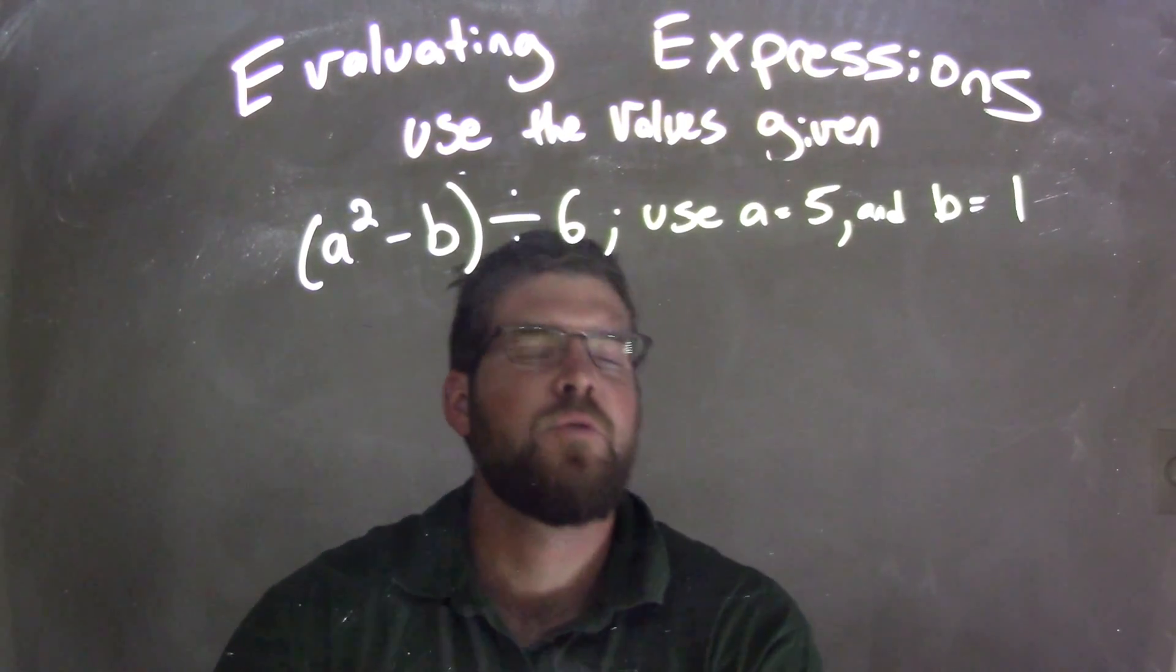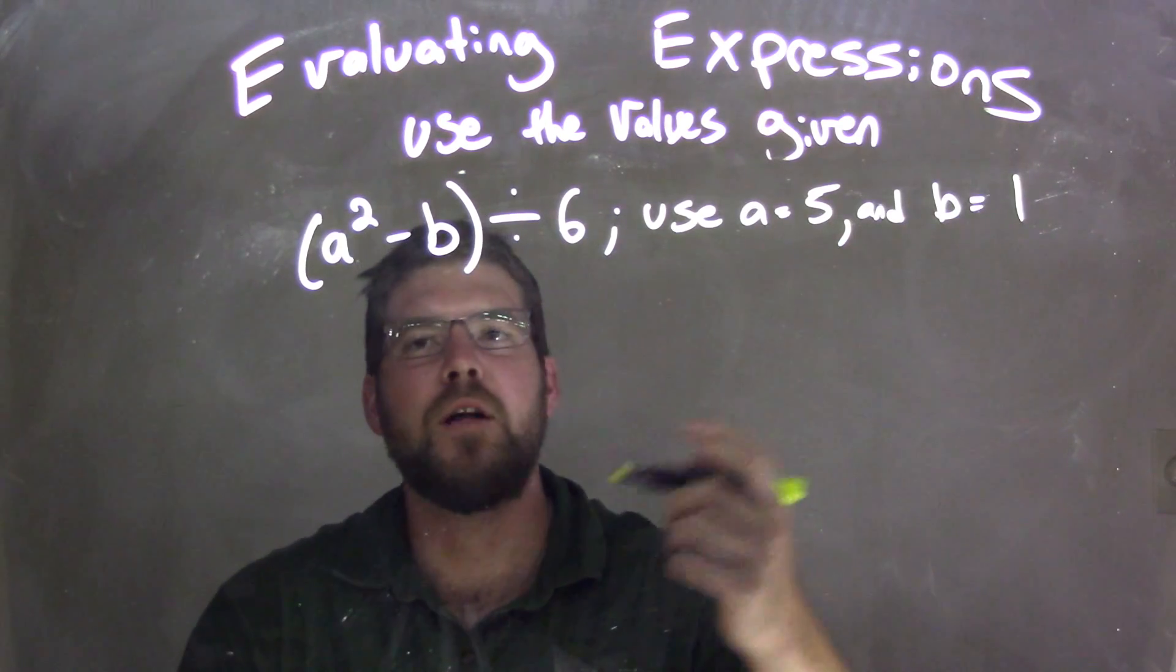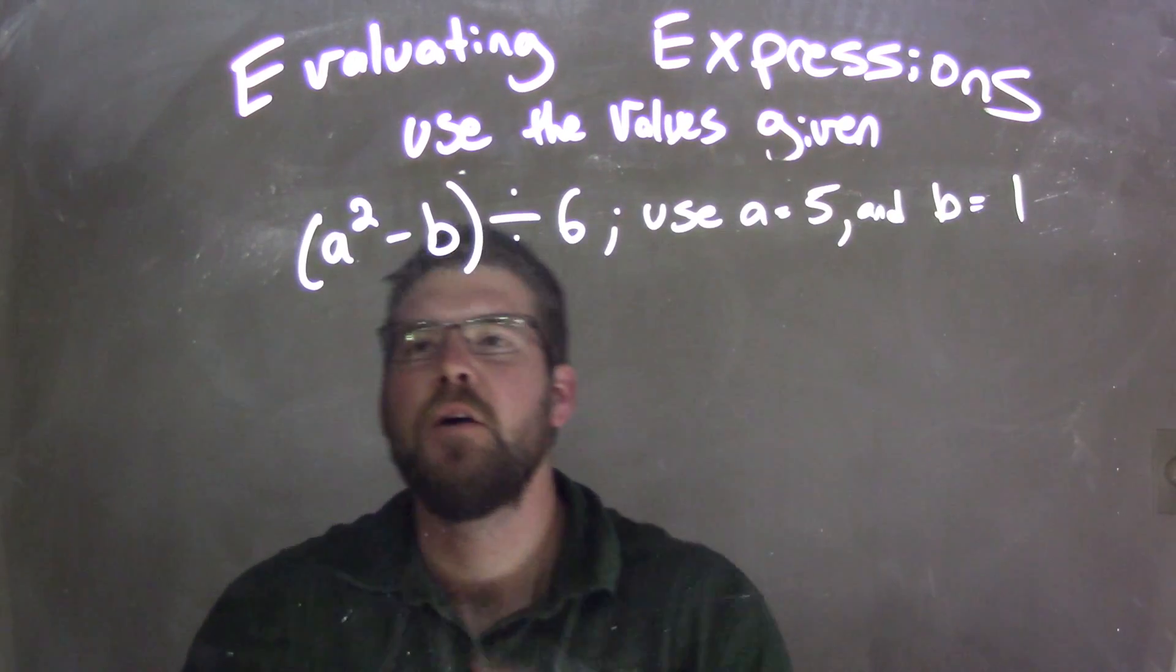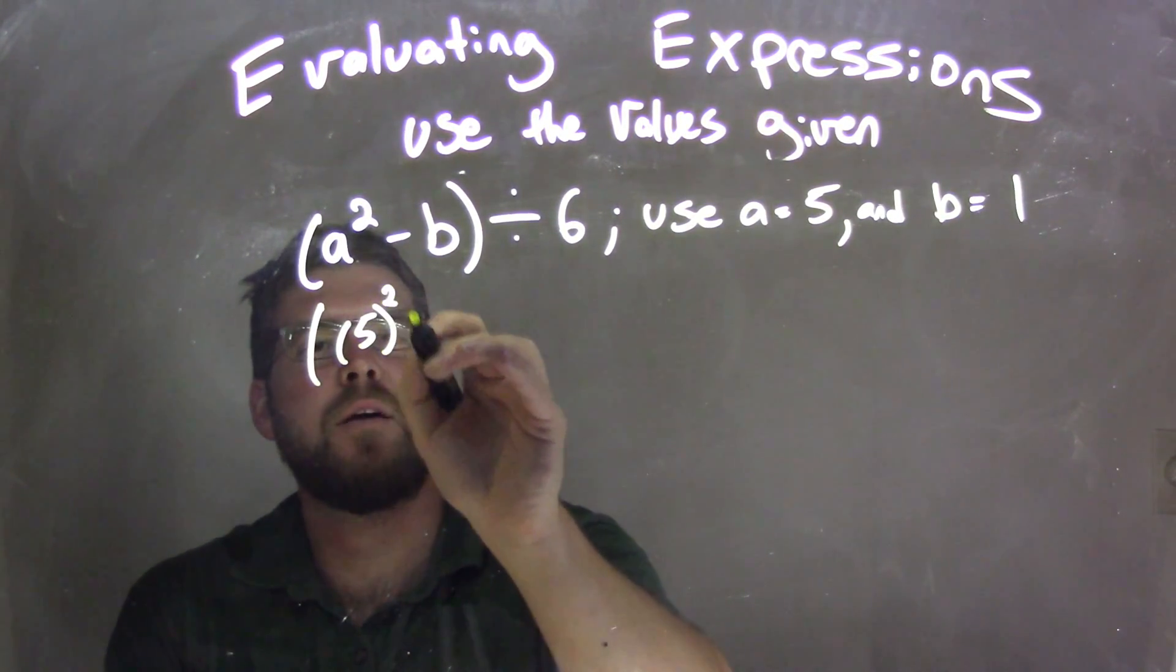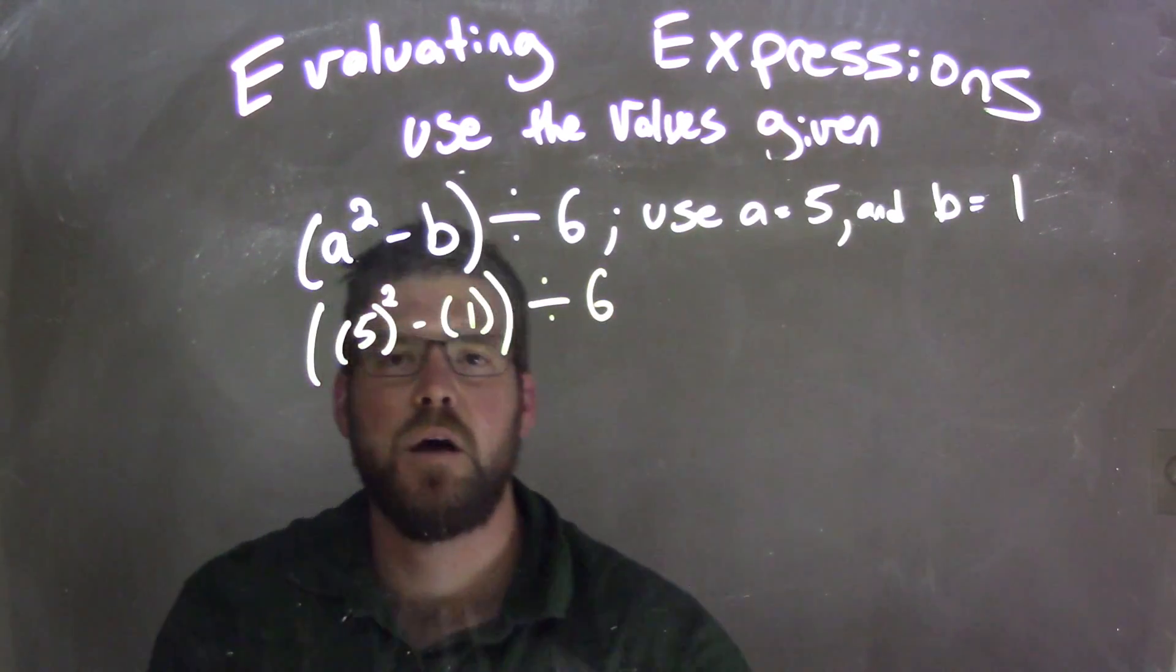So our first step is we want to substitute a to be 5 and b to be 1. So wherever we see an a we put a 5 in, and wherever we see a b we put a 1. So right here in the beginning I have a which is 5 squared minus b which is 1, and then we divide it by 6 on the outside.